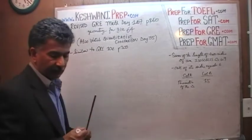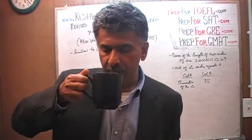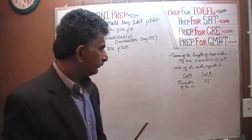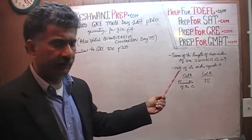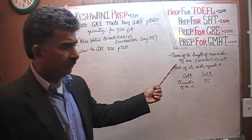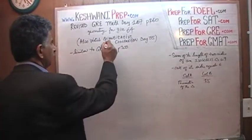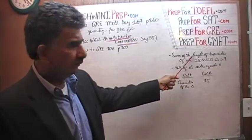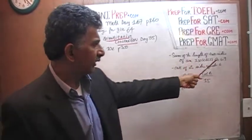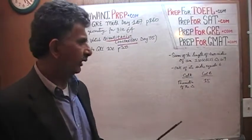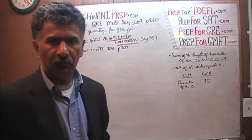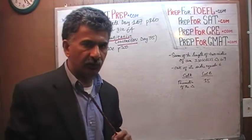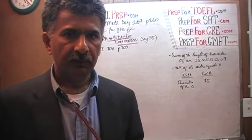Actually, number 6 is the one I had initially planned to do, but before we do problem number 6, let's play a little game. I want you to solve this problem first. I am going to read it to you in case you have trouble reading my handwriting. It is a quantitative comparison question — you are given two quantities and your job is to compare them. The question says: the sum of the lengths of two sides of an isosceles triangle is 9, and one of its sides equals 6. Column A is the perimeter of the triangle; Column B is 15. Pause the video, solve the problem yourself, and then continue.